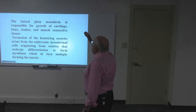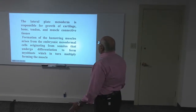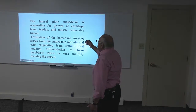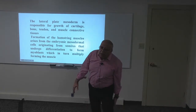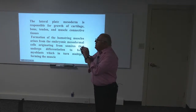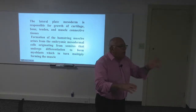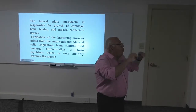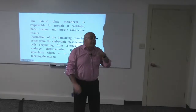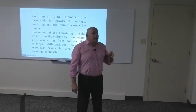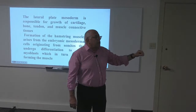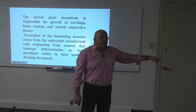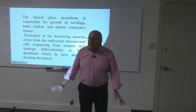The lateral plate of the mesoderm is responsible for the growth of cartilage, bone, tendon, and the formation of the hamstring muscle — that's how we form the hamstring at the back of your thigh. Each segment, which we call the dermatome or myotome, is innervated by a nerve. The nerve growth factor gives the signal to grow; without this nerve signal, growth is rudimentary — there is something, but not fully developed.